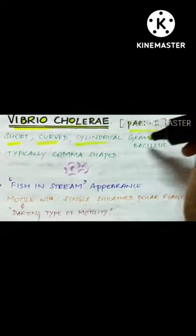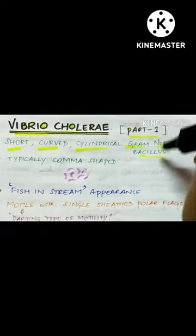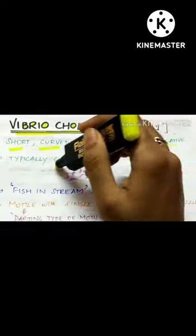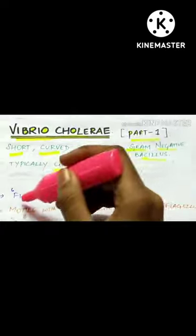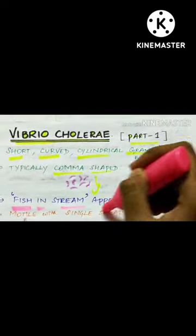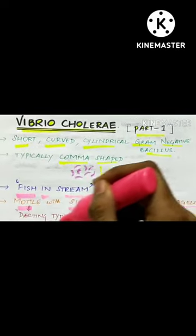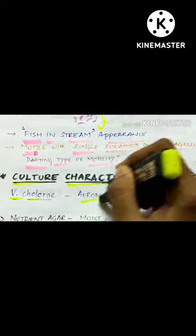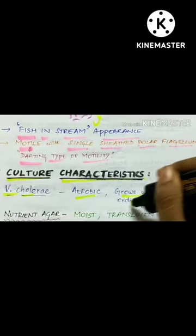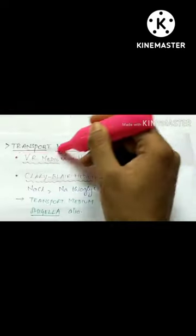Vibrio cholerae are short, curved, cylindrical, gram-negative bacillus. They are typically comma-shaped and have a fish-in-stream appearance. The darting type of motility is aerobic and it grows well on ordinary media.